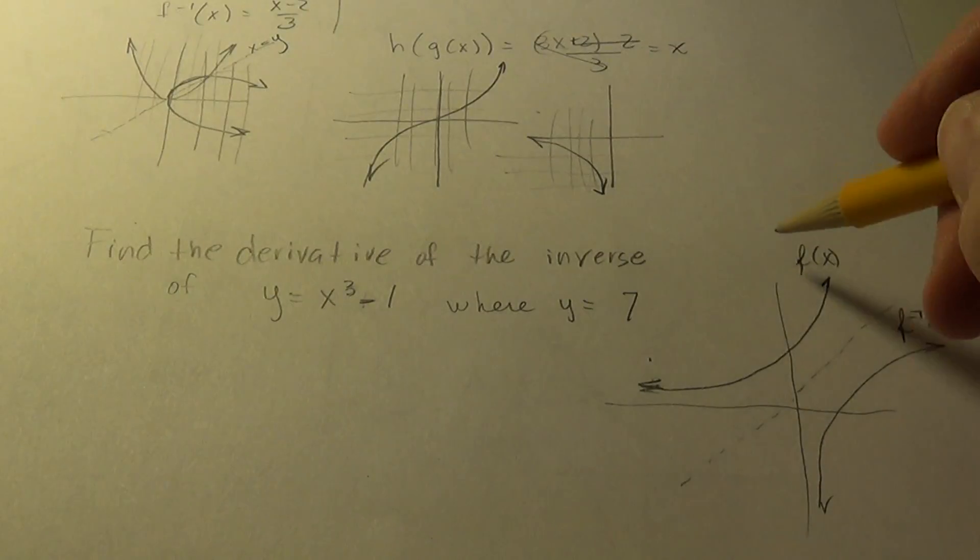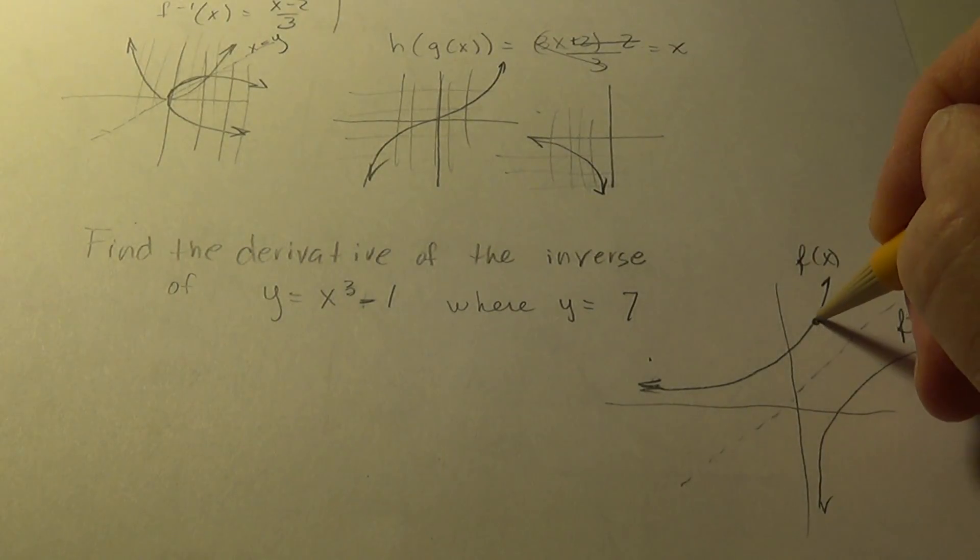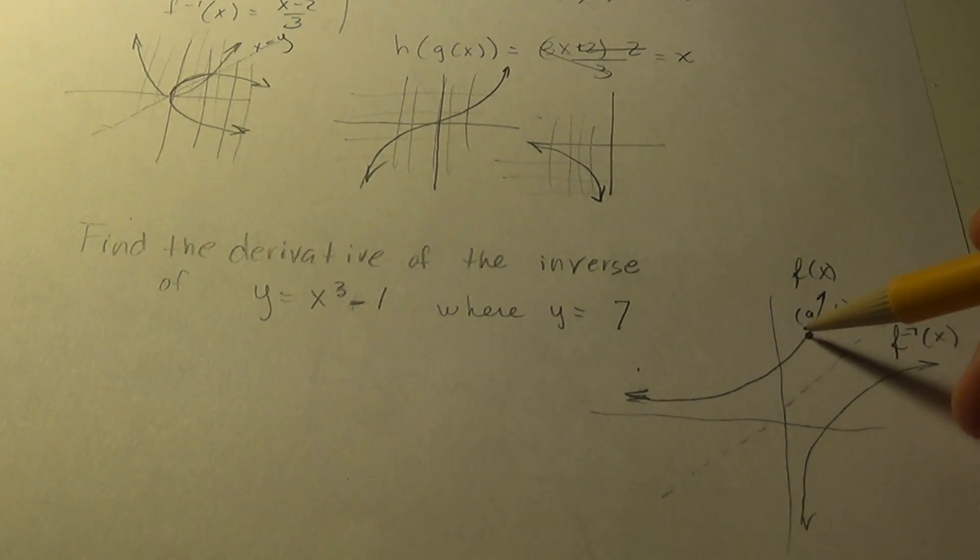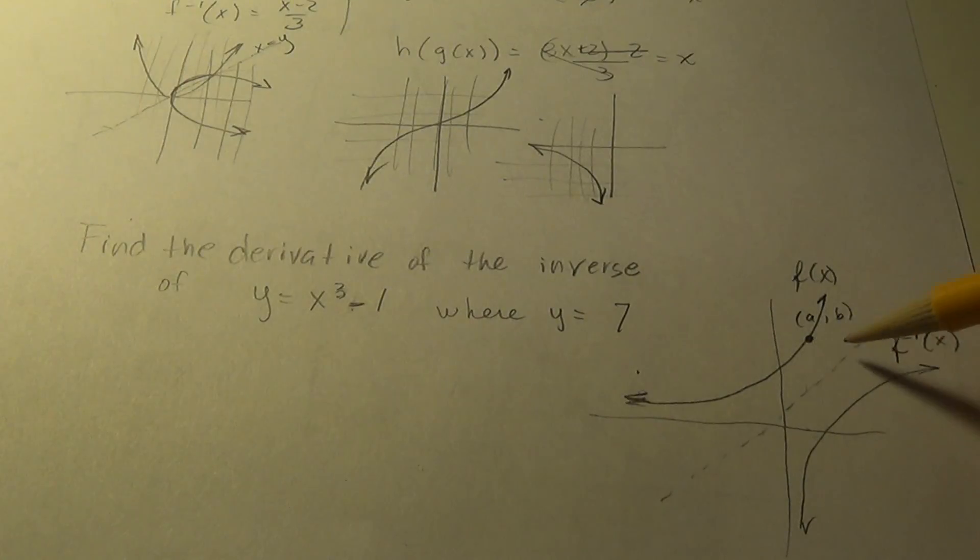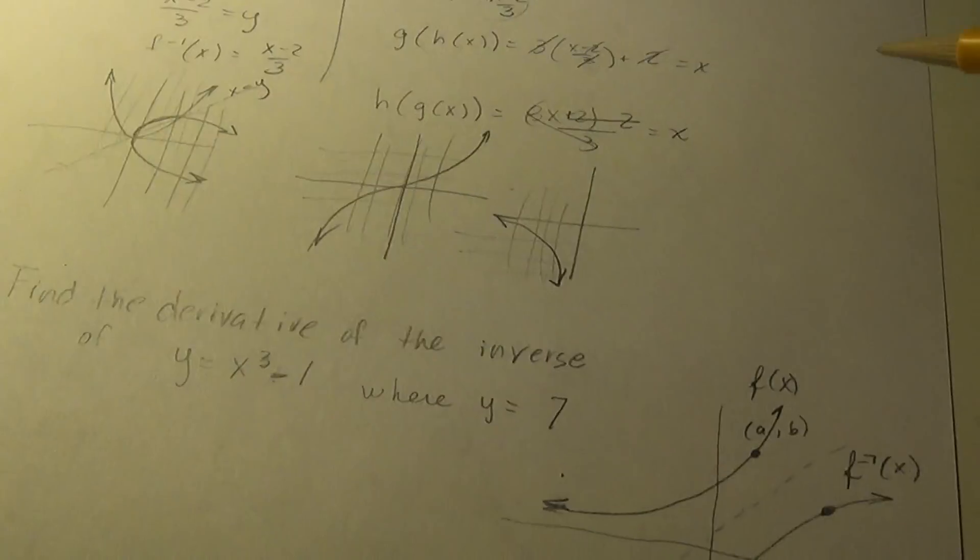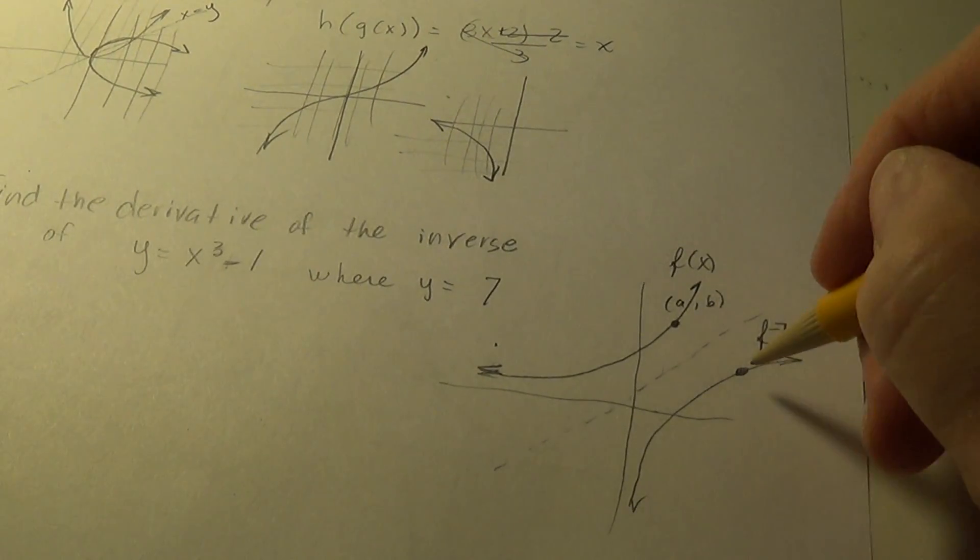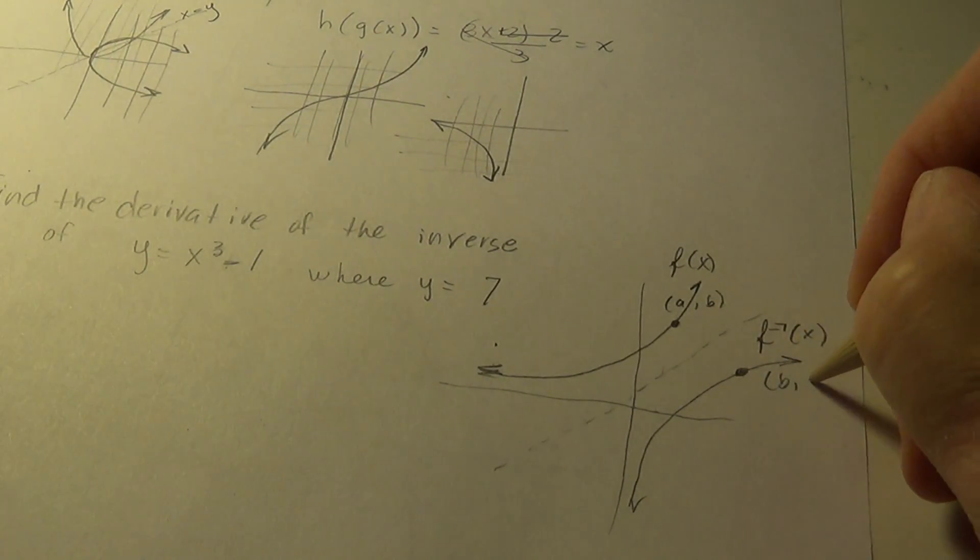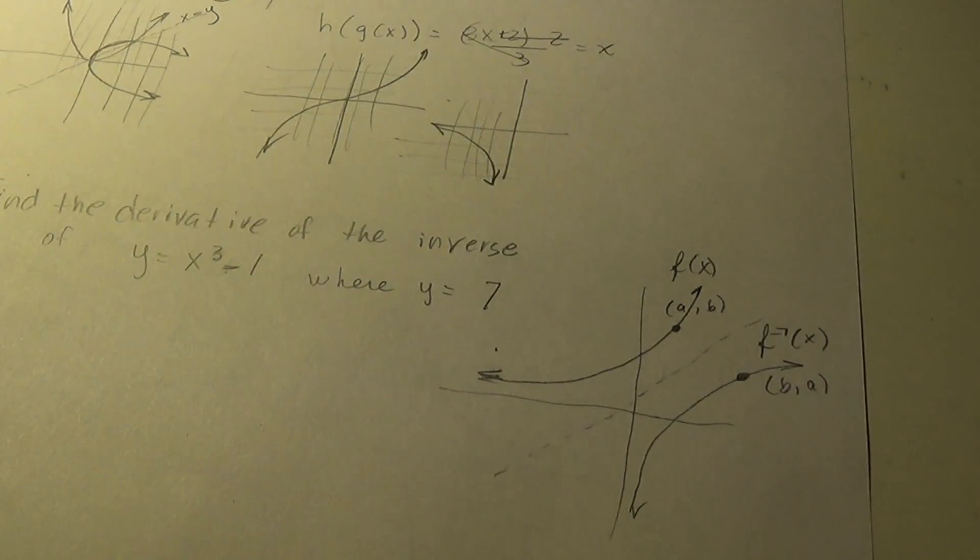Now, interesting thing. If the point here is a over and b up, we call it a, b. There's a corresponding point, we'll call it a close relative, to this point on the inverse. And because of this x and y exchange, when we come up with the inverse, this point is b, a. And that's always true.